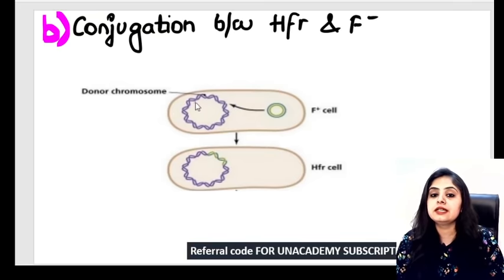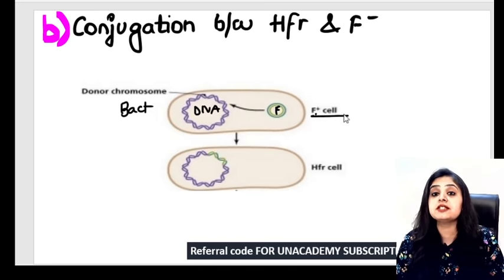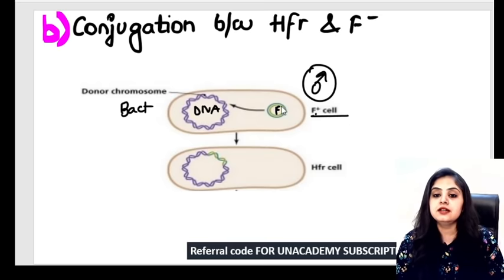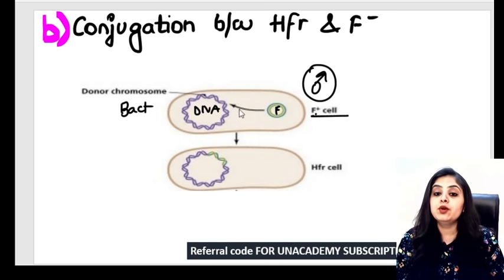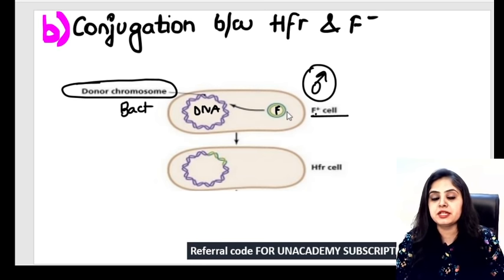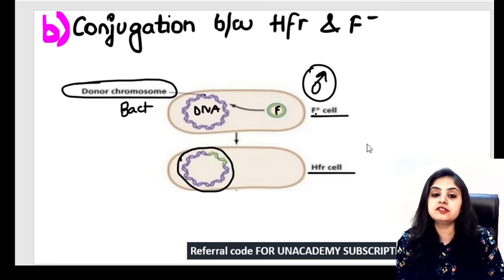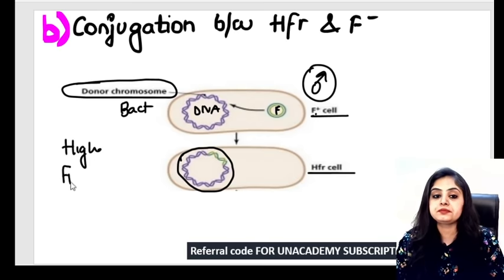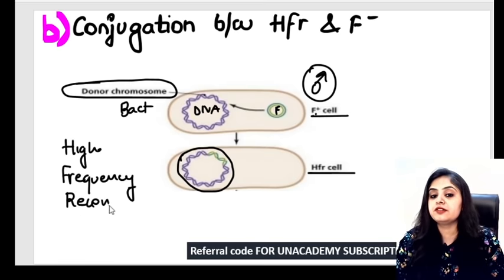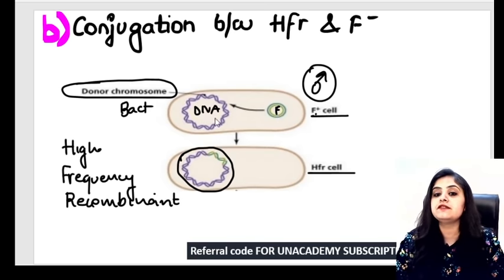In the second scenario, before the transfer occurs, something happens inside the donor bacterium itself. The main bacterial chromosome and the fertility factor (plasmid) recombine — they fuse together within the same donor cell. This kind of cell is known as HFR — High Frequency Recombinant. So when the main DNA and the fertility factor fuse, you call it a High Frequency Recombinant.